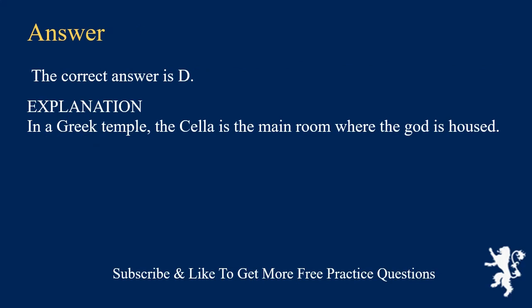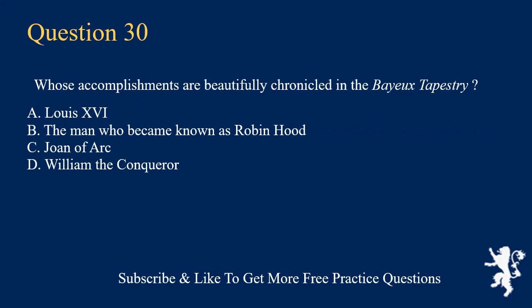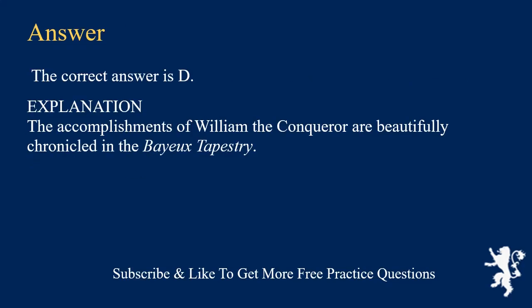Explanation: In a Greek temple, the Cella is the main room where the god is housed. Whose accomplishments are beautifully chronicled in the Bayeux Tapestry? A. Louis XVI. B. The man who became known as Robin Hood. C. Joan of Arc. D. William the Conqueror. The correct answer is D.